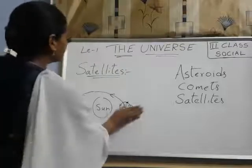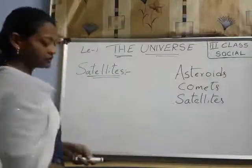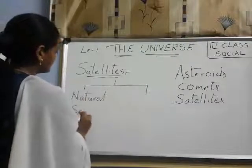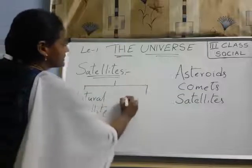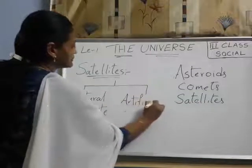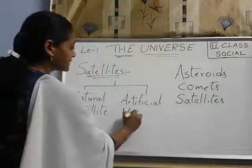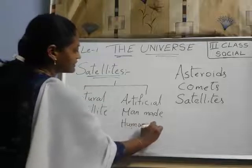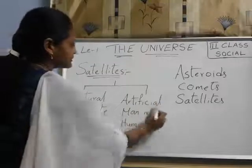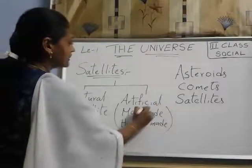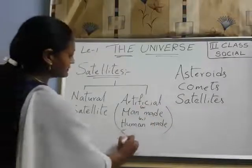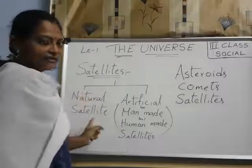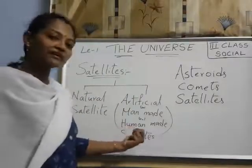Satellites are mainly two types: natural satellite and artificial satellite. Artificial satellites are also called man-made or human-made satellites. Human means we only. So artificial satellite, man-made satellite, and human-made satellite all refer to the same thing.